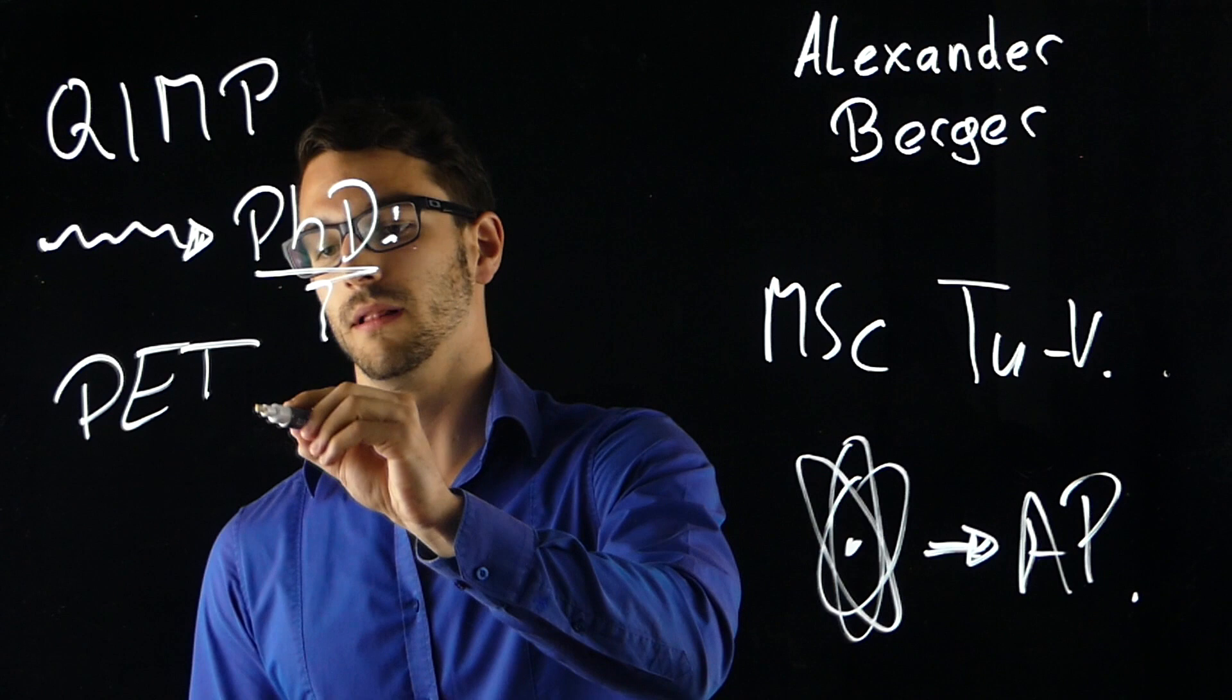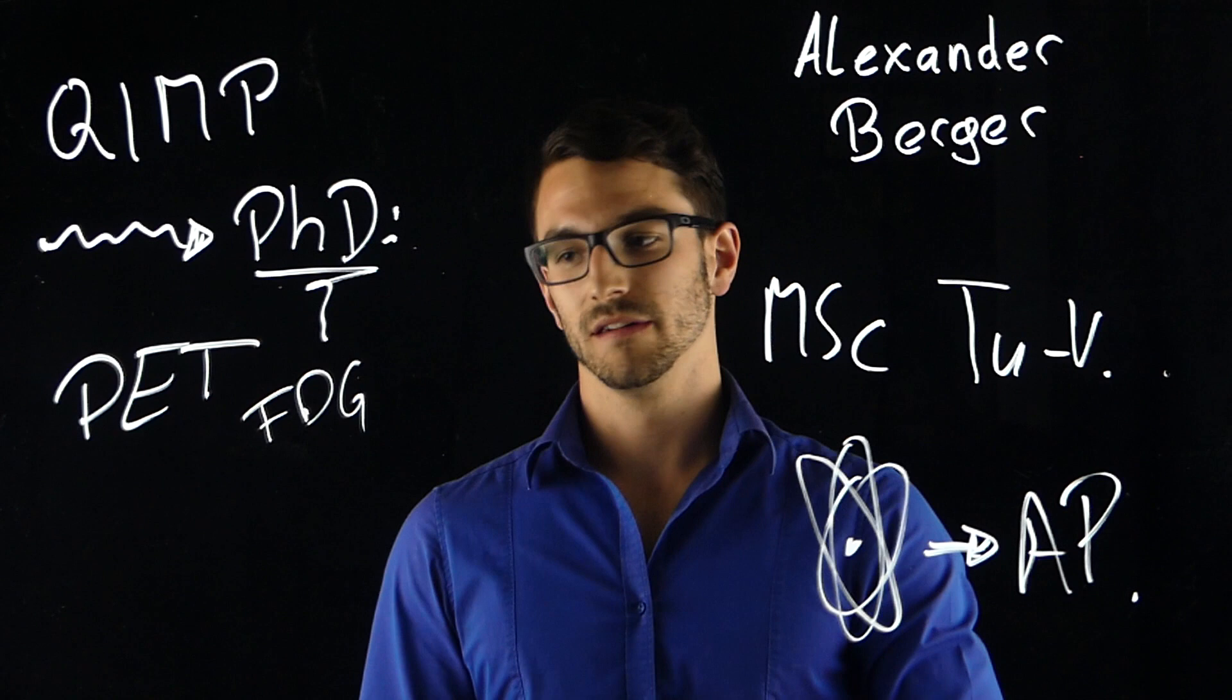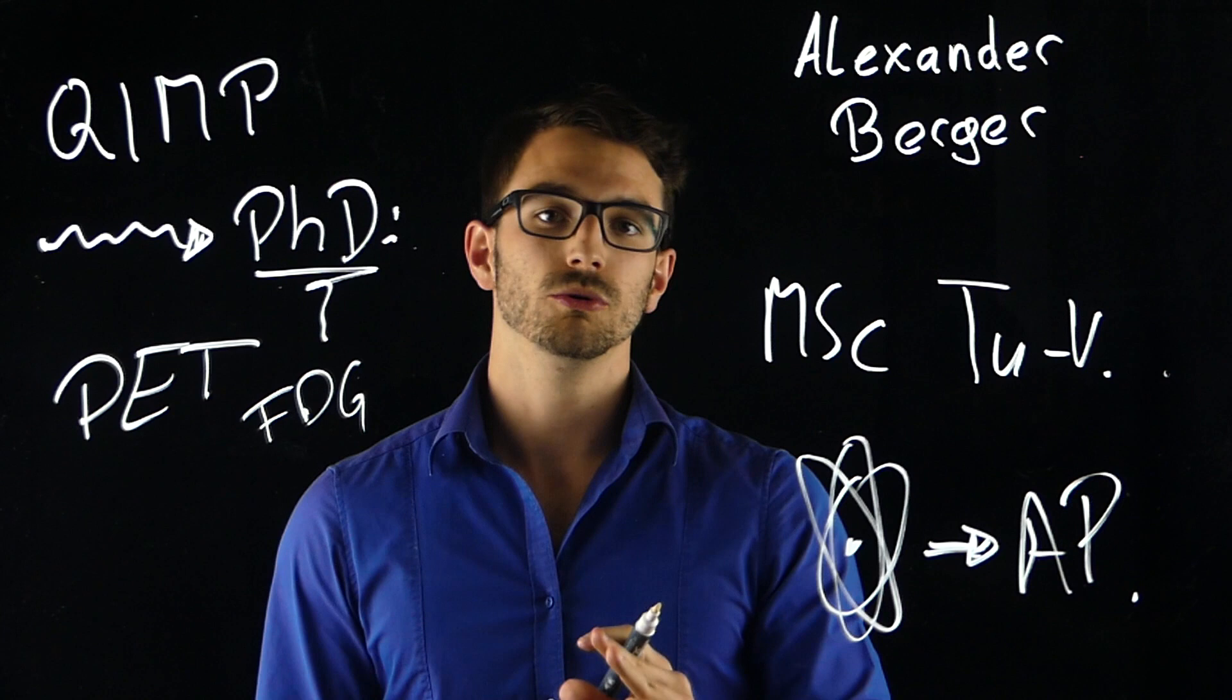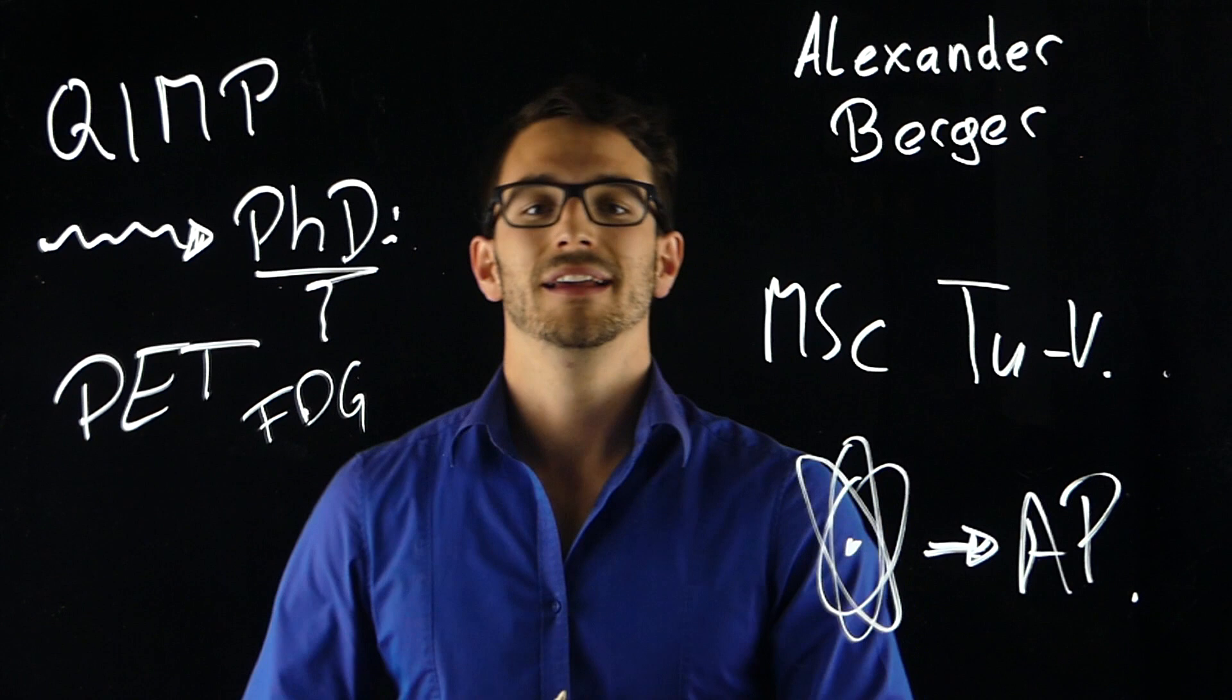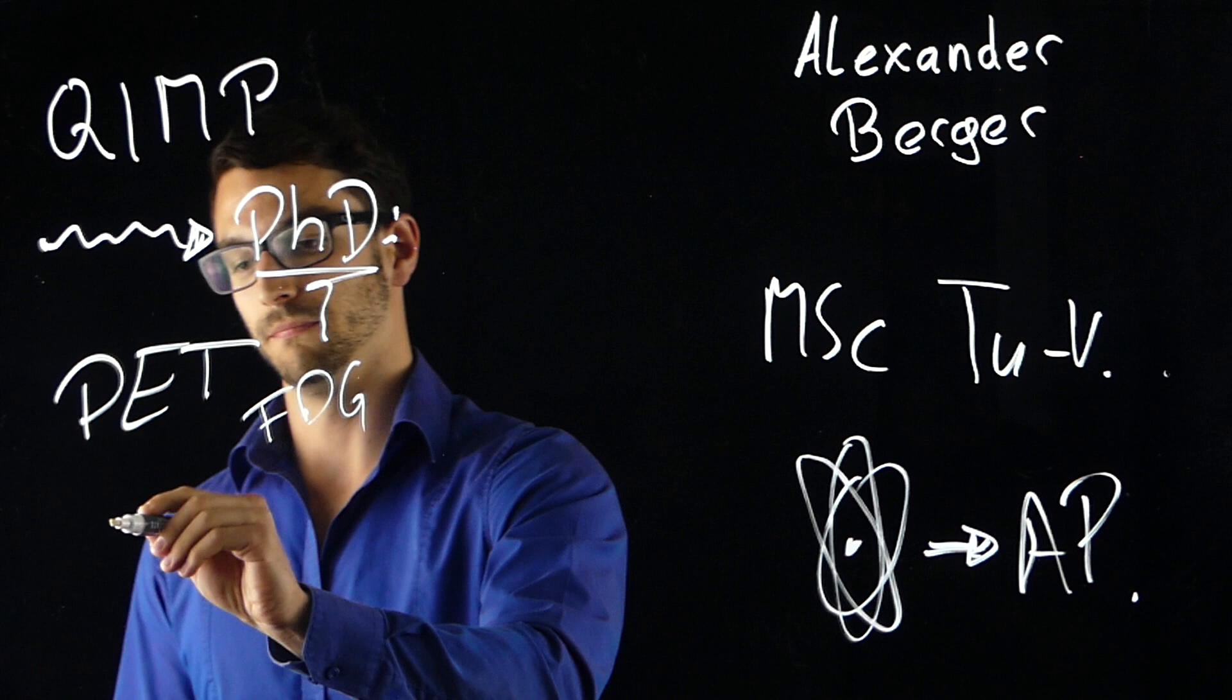FDG has good properties emitting photons. This is an optimal positron emitter. What we want to do in a collaboration with Madrid and a collaboration with Siemens is to test non-optimal positron emitters. For example we use rubidium, gallium or even iodine 124.